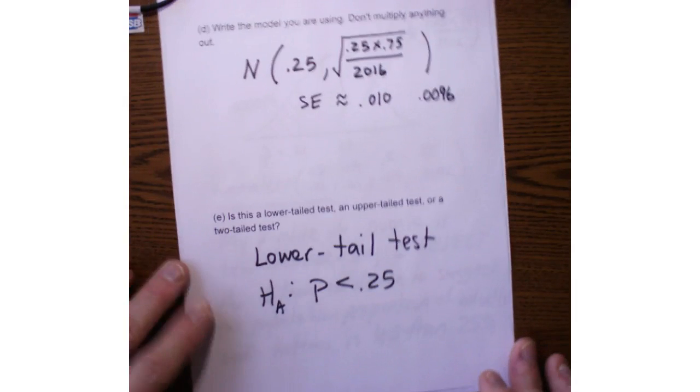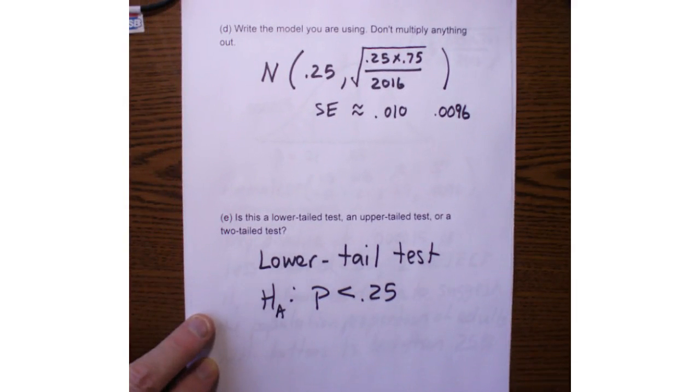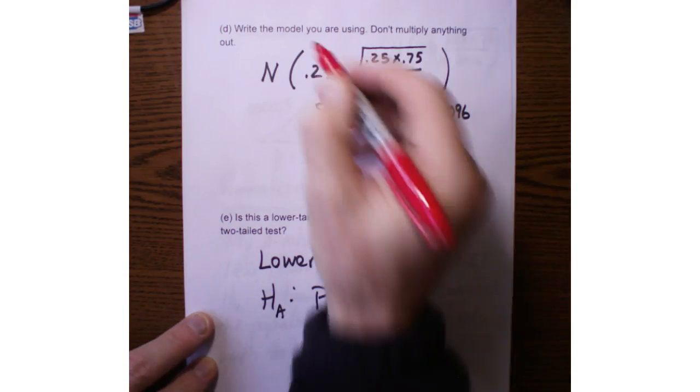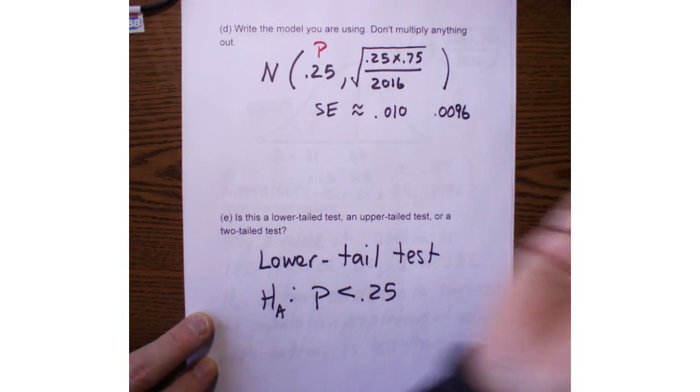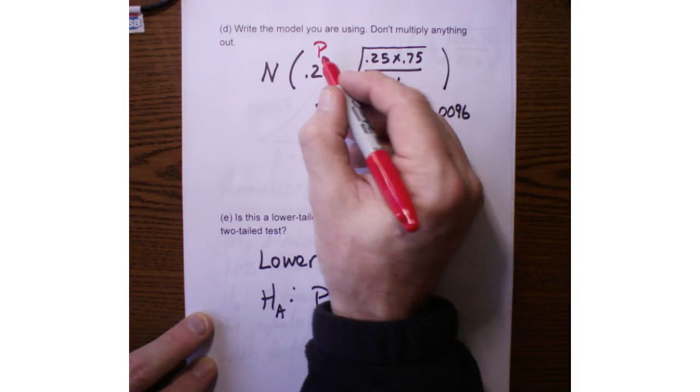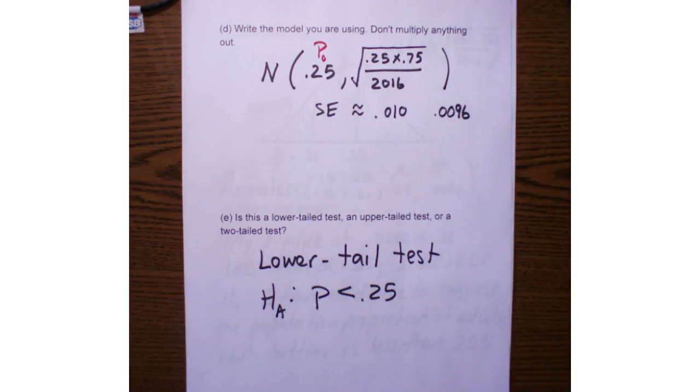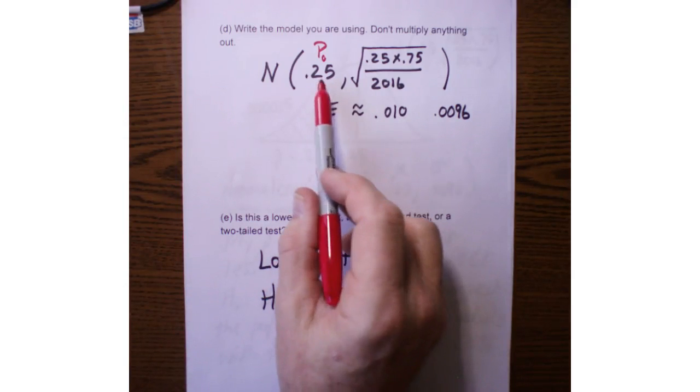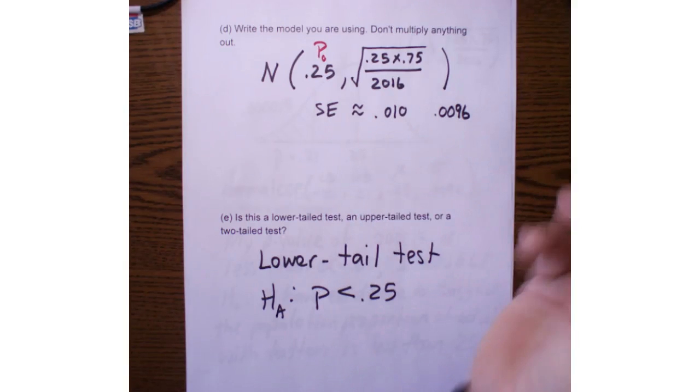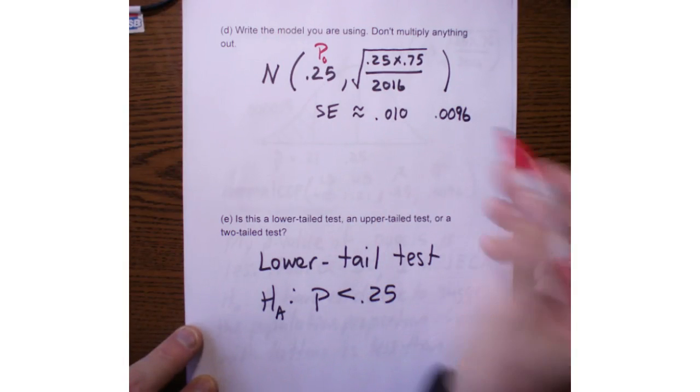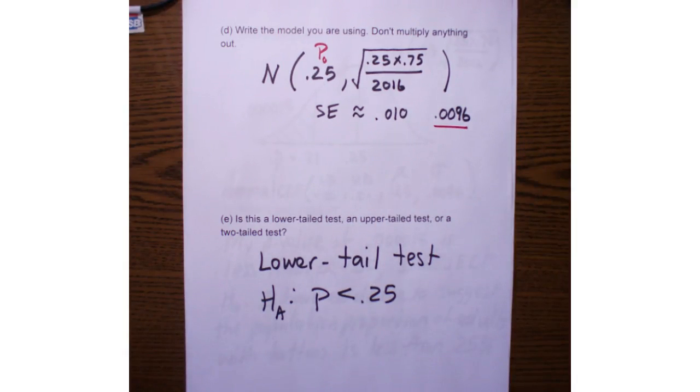So what model am I going to use? I'm going to use this normal model. This normal model is based on the null proportion or the population proportion, which I'm assuming to be true. Sometimes that's written with a P sub 0. But we've seen this model a number of times before. My mean is 0.25, and my standard error is 0.01, or a little bit more decimal places, 0.0096.